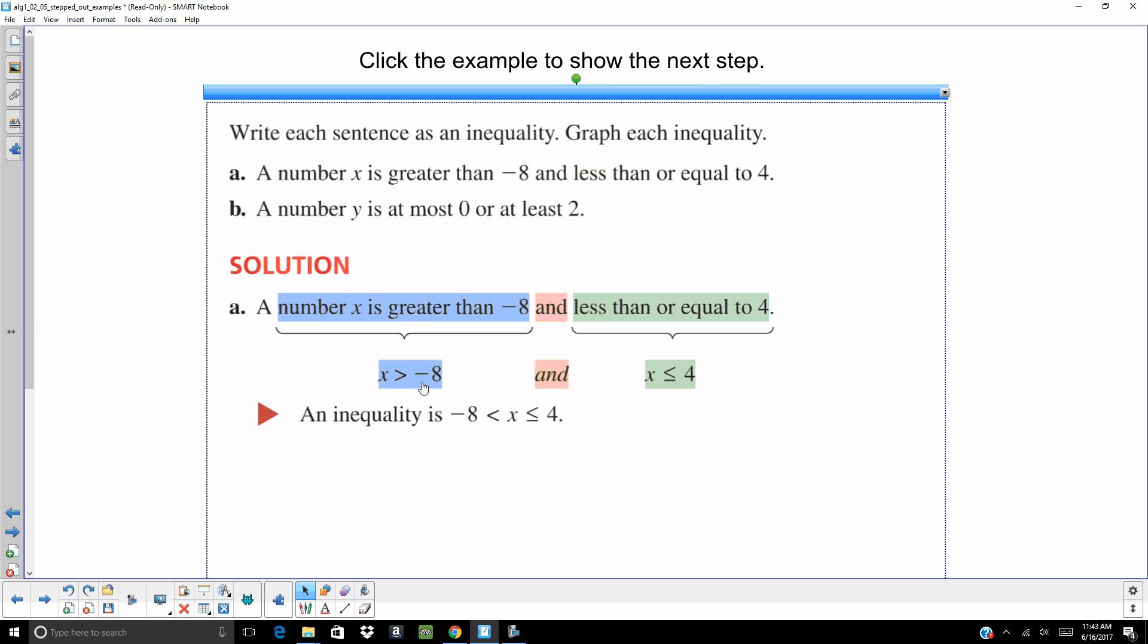And our smallest number is negative 8 and if you notice it's pointing to the negative 8. It's still pointing to the negative 8. Here it's pointing to the x. It's still pointing to the x near the 4. So x is in between negative 8 and 4. It's bigger than negative 8, smaller than 4.